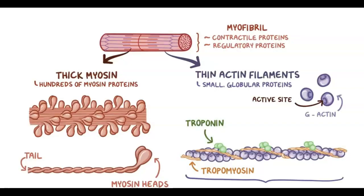Troponin proteins are smaller and are made up of three subunits: a T-subunit that binds to tropomyosin, an I-subunit that binds to F-actin, and a C-subunit that binds to calcium ions. Together, the F-actin, the troponin, and the tropomyosin make a complete thin filament.